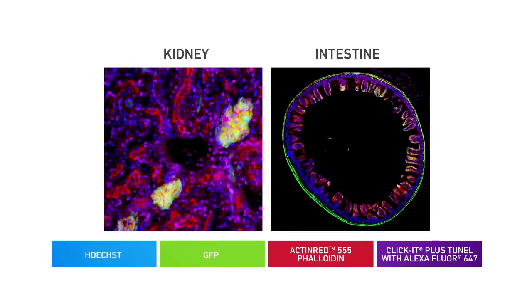The specificity, ability to multiplex, and increased signal strength of the Click-iT Plus TUNEL assay works with many tissue types. The image shows the results in kidney and whole intestine.